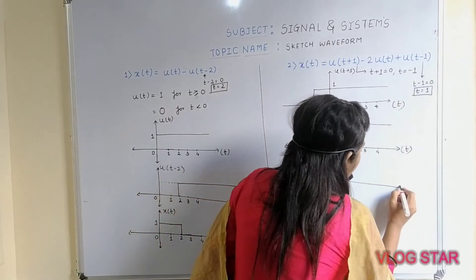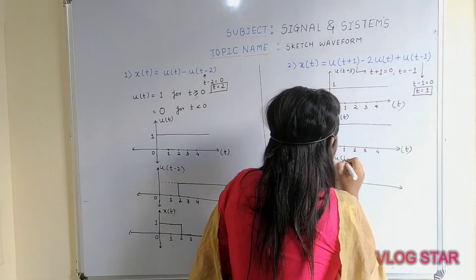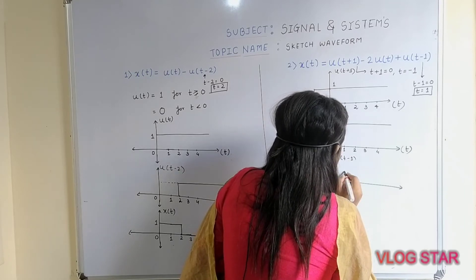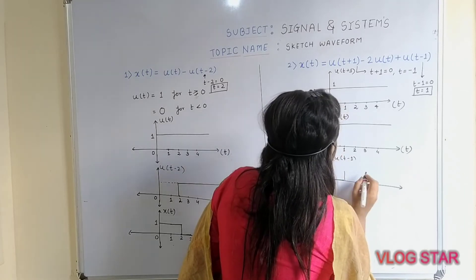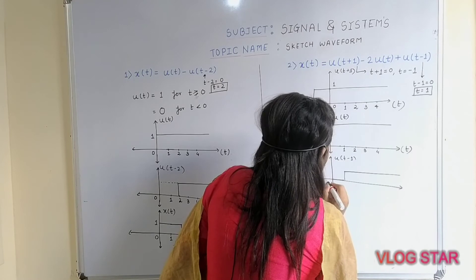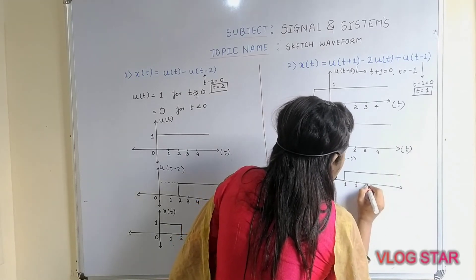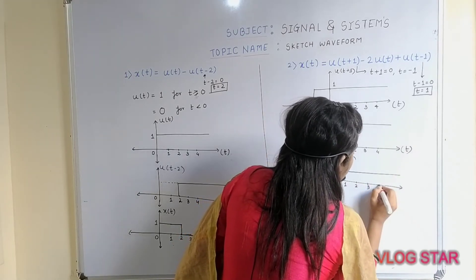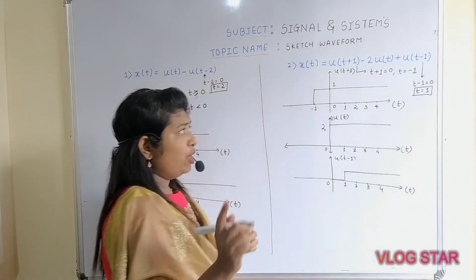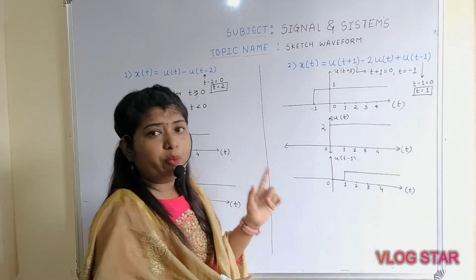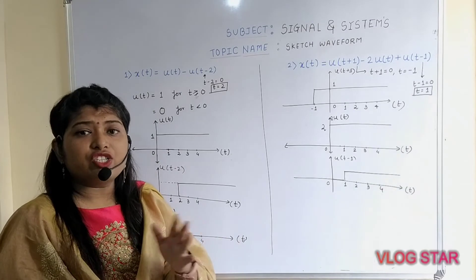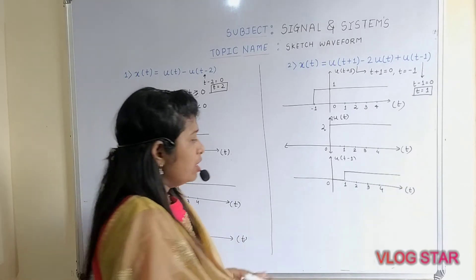To plot u(t − 1), the signal shifts towards the right at t = 1. Now you have to perform addition and subtraction between the three signals to draw the final signal x(t).